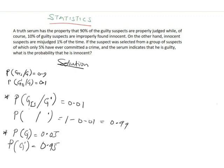The question asks: what is the probability that the person is innocent given that the serum indicates he is guilty? That is, we want to find the probability of G-complement given GTS — the person is innocent but declared guilty by the truth serum.